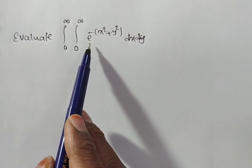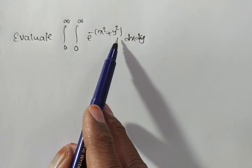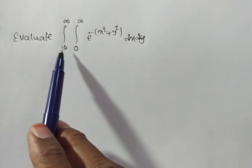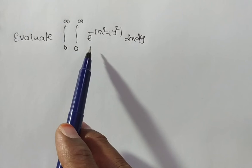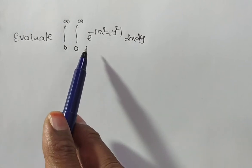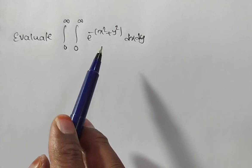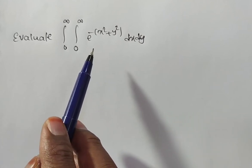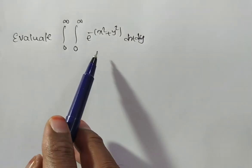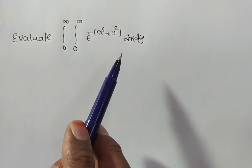You see the integrand here is e to the power of minus of x square plus y square. Generally, the limits of the integral are also independent here, so you can do it in the Cartesian coordinate plane. But sometimes it is better to change the variables. By changing the variables, we can do it very easily. So now this problem I am solving by changing into polar coordinates.